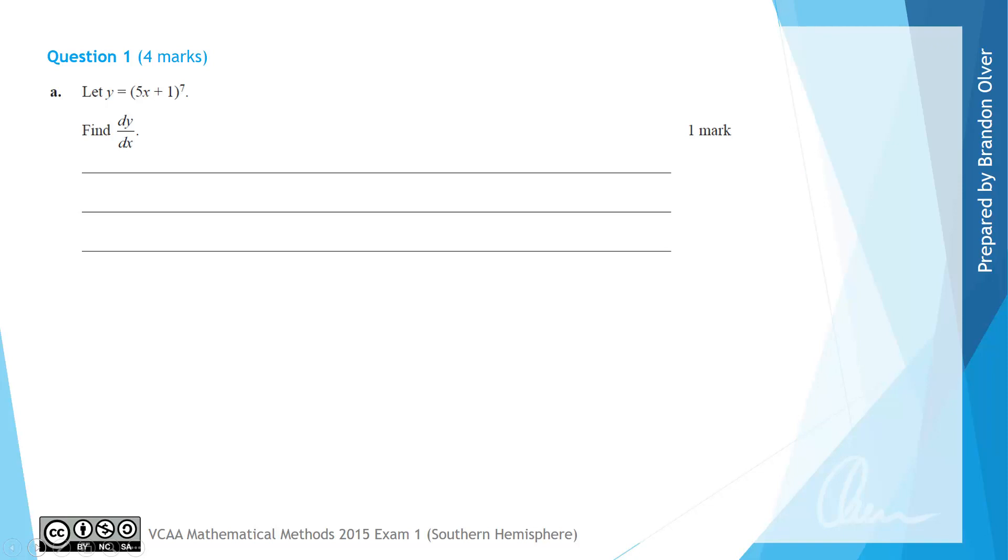For part A we have the function y equals 5x plus 1 to the power of 7, and we're asked to find the derivative dy/dx.